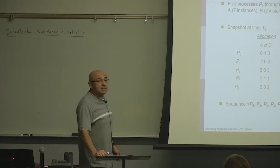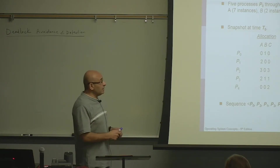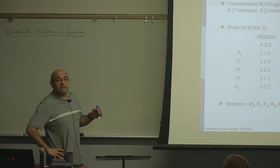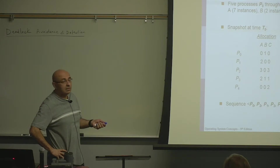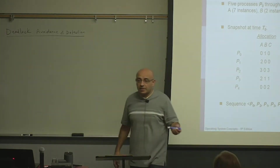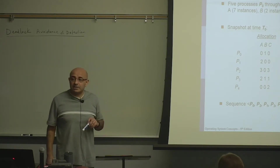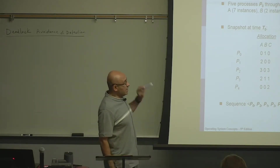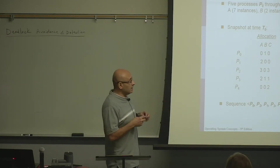Having zero instances available doesn't necessarily mean that we have a deadlock. It will mean that we have a deadlock only under the condition that everything requests something more than zero. If every process is requesting something more than zero, then we know that we have a deadlock. But since some processes are requesting zero, there is a possibility of not being in a deadlock.